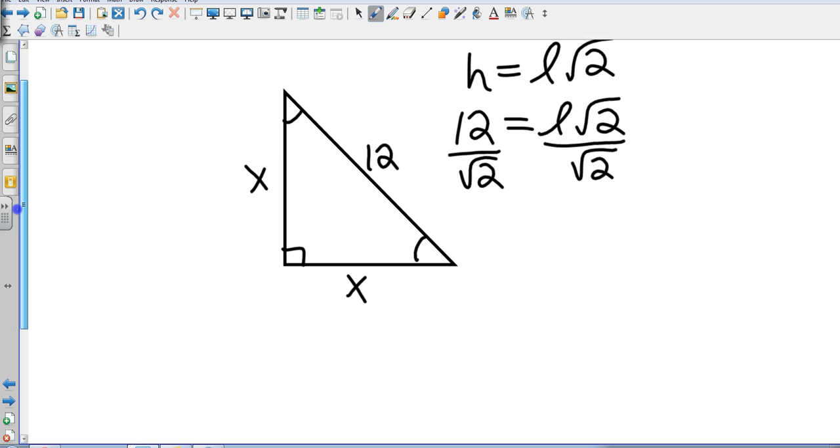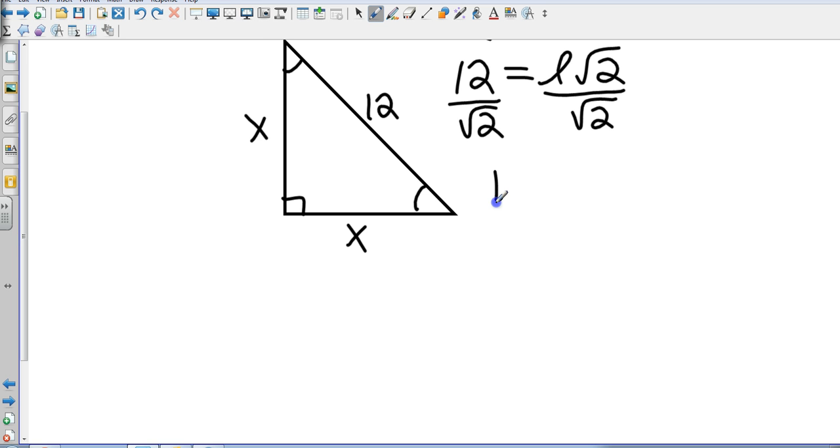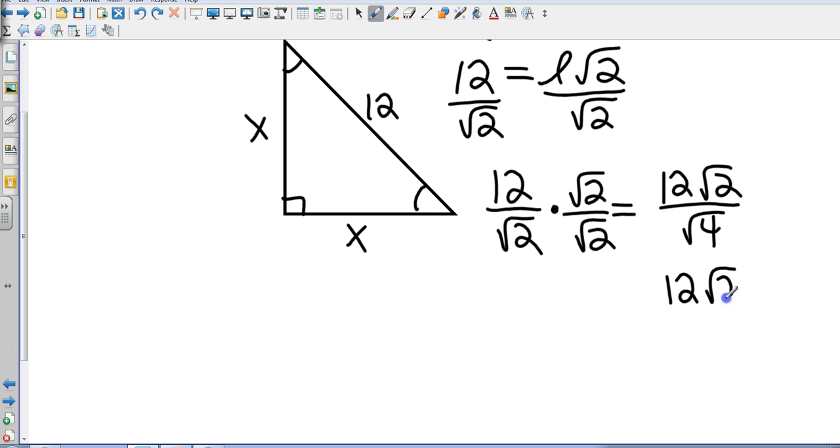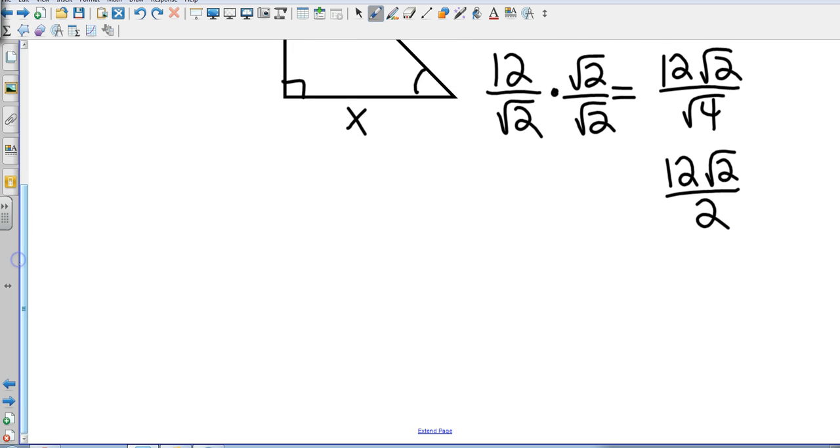Now a red flag should be shooting up right now, because we know we cannot have radicals as a denominator. So to get rid of that radical, we're going to multiply top and bottom by the square root of 2, so that gives me 12 square roots of 2 all over the square root of 4, which is 12 square roots of 2 all over 2. And then I can reduce that finally, 2 goes into 12 six times, so that's going to end up making my leg equal to 6 square roots of 2. And that is example 2 on page 553.